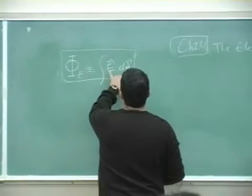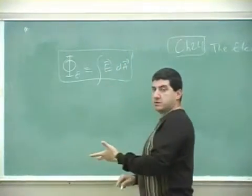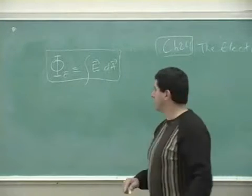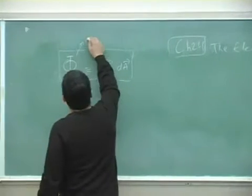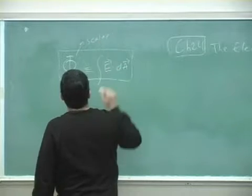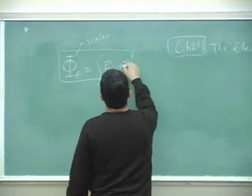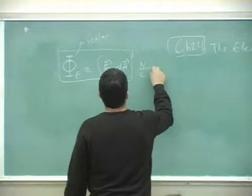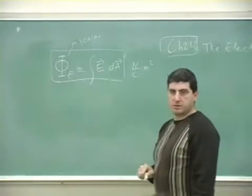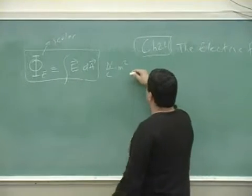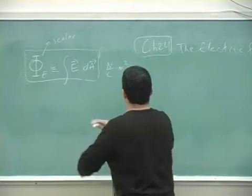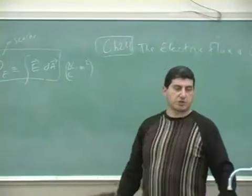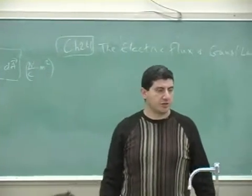When you take the dot product of two vectors, you get a scalar. So the electric flux is just a scalar — it's just a number. Its units are the unit of the electric field times area: Newton per Coulomb times meter squared. We don't give it any special abbreviation; we just leave it as Newton per Coulomb times meter squared.